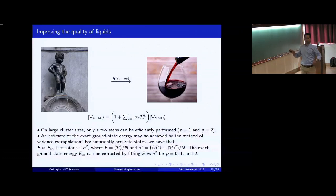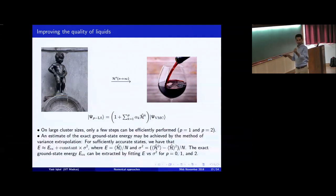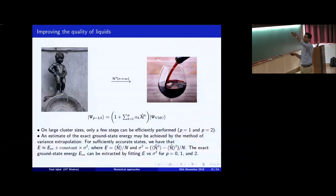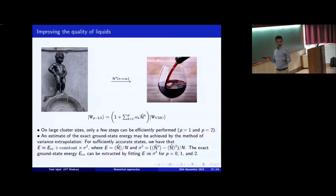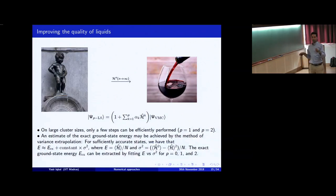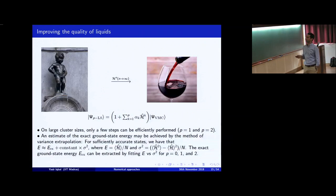What happens is that you start from a trial state, apply one Lanczos step — reducing the energy and variance — then apply another Lanczos step, reducing both further. With three points, you can do an extrapolation to zero variance. We know that when you have an eigenstate, the variance of the energy is identically zero. So by the method of variance extrapolation, you can get an estimate of the ground state energy. I'll show benchmarking with different models, where on small systems the Lanczos exact diagonalization is available.